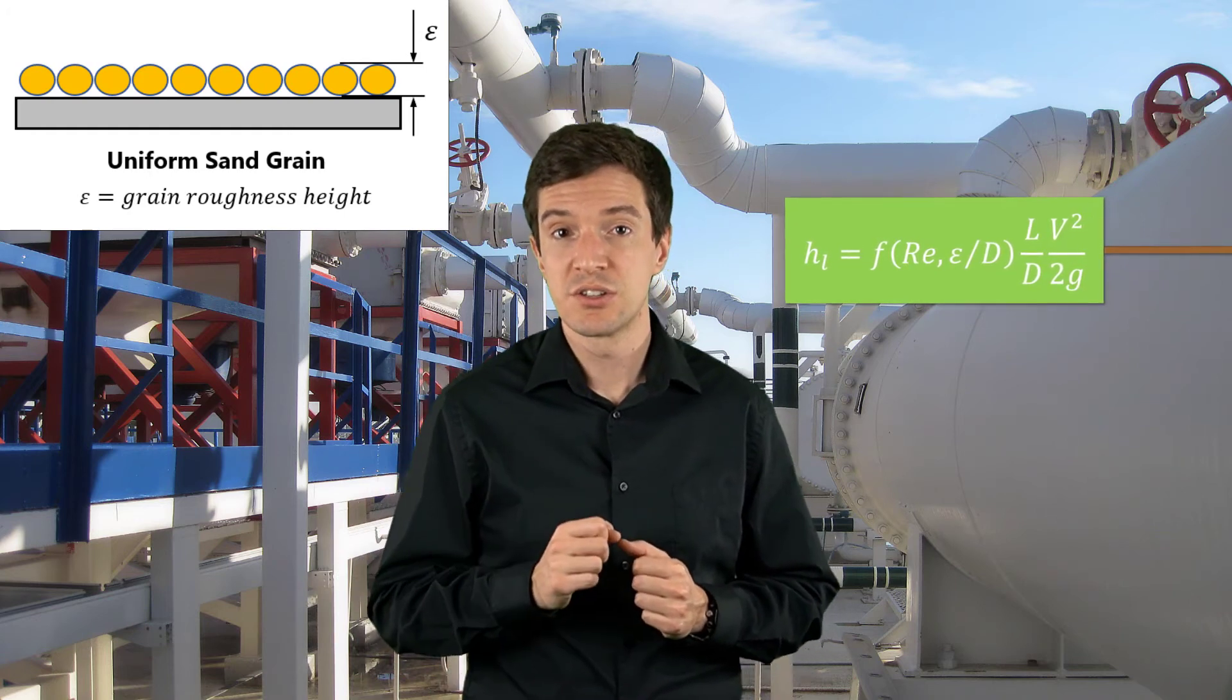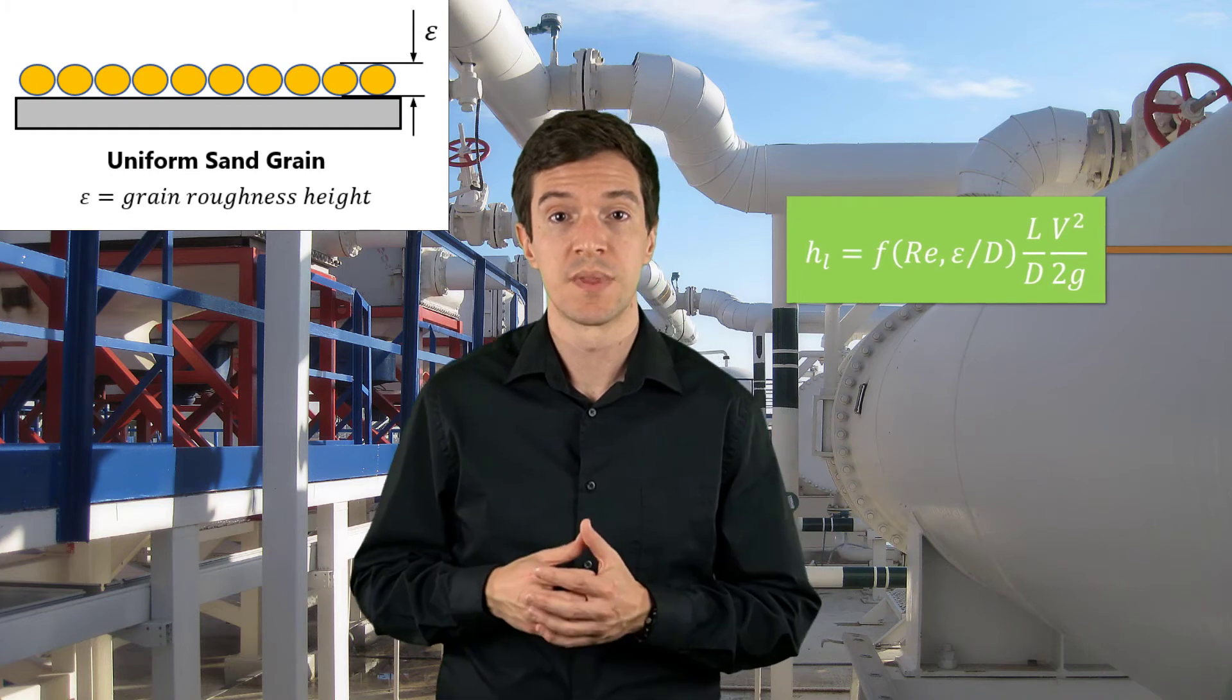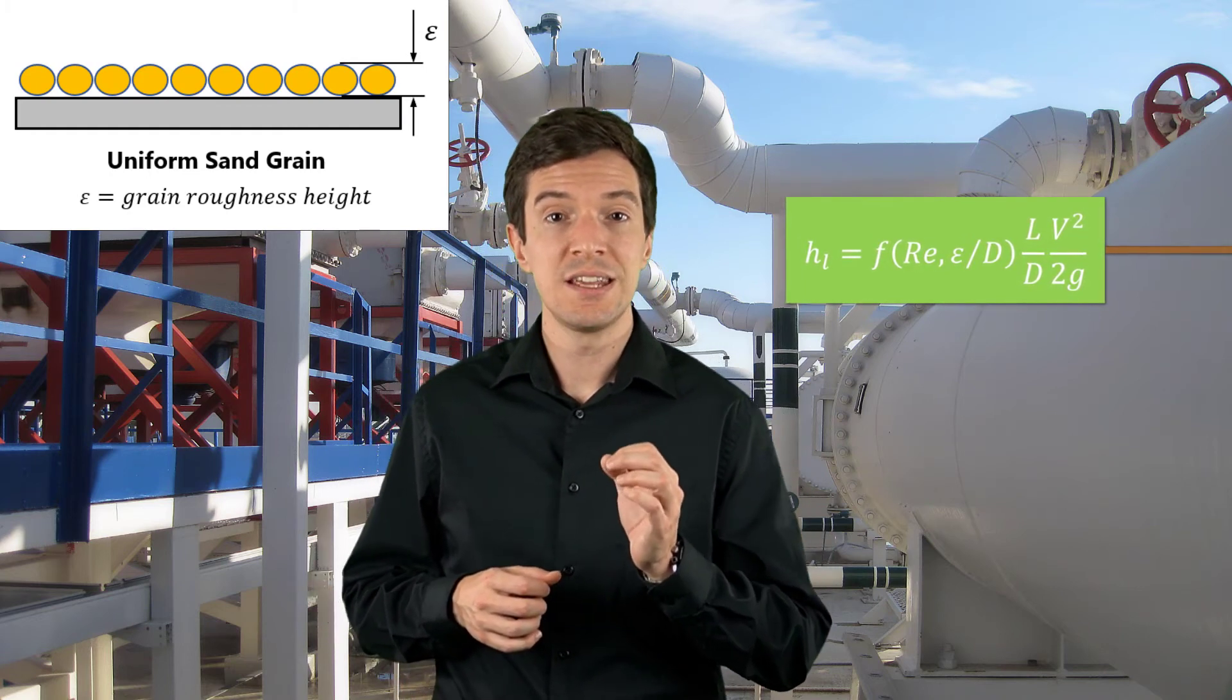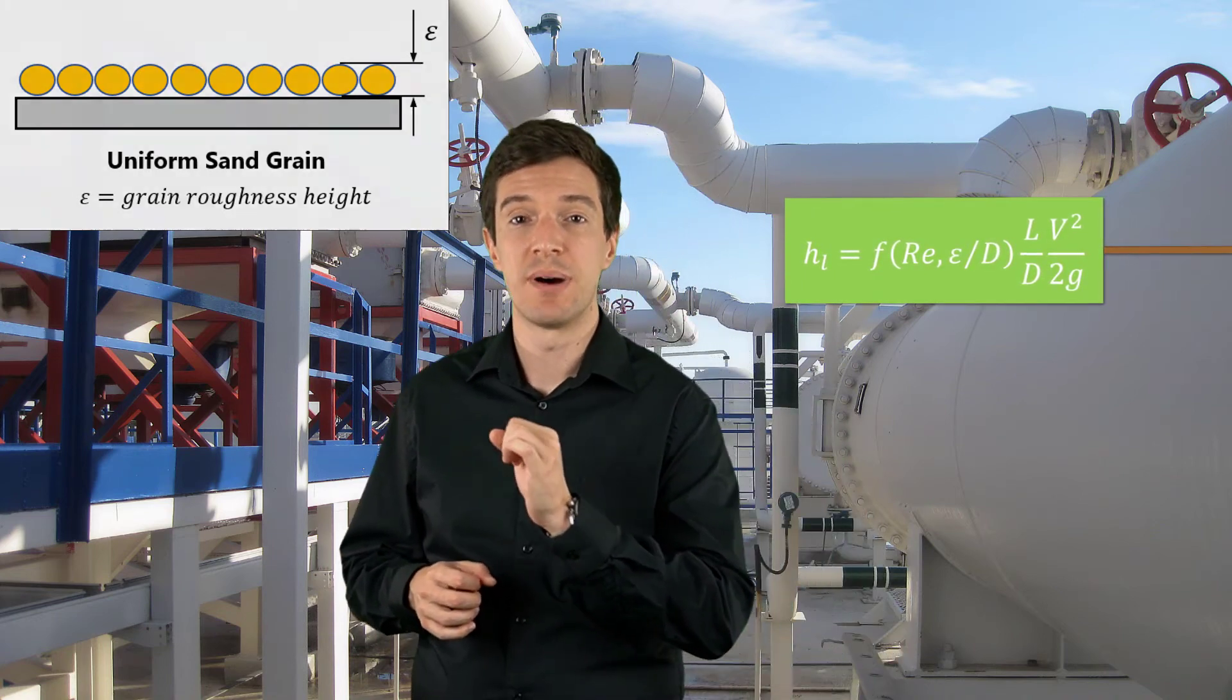This relation is known as the Darcy-Weisbach equation, and it's valid for any fully developed steady incompressible pipe flow. So, how can we estimate the friction factor and the pressure drop for any generic pipe?